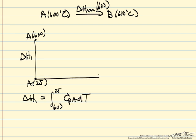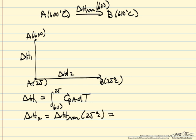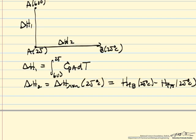We then carry out the reaction to form B at 25 degrees C. So that's delta H2. Well delta H2 is delta H of the reaction at 25 degrees C, and that's equal to the heat of formation of B at 25 degrees C minus the heat of formation of A at 25 degrees C. And these heats of formation are in tables. So we can look those up.